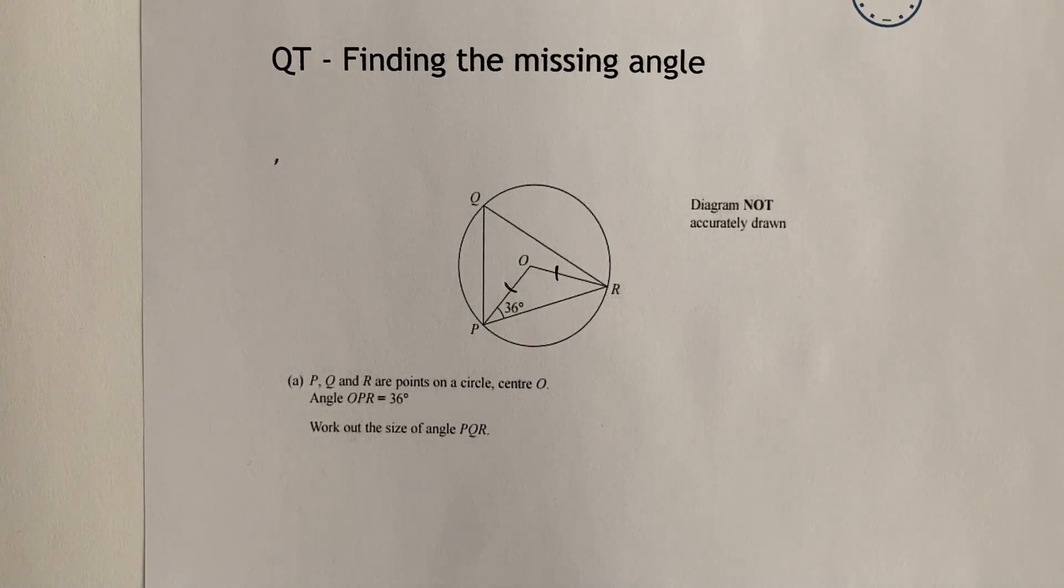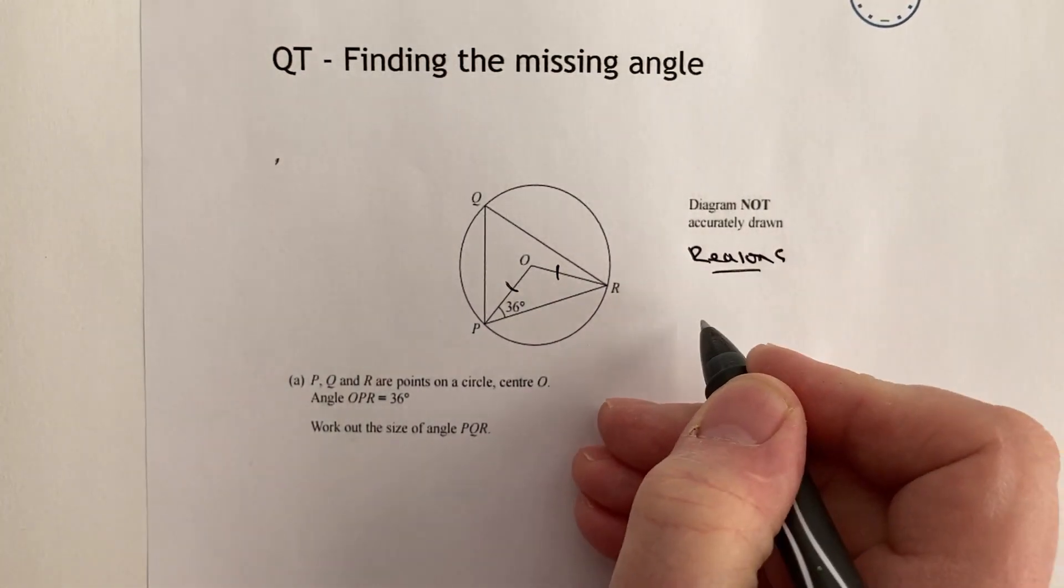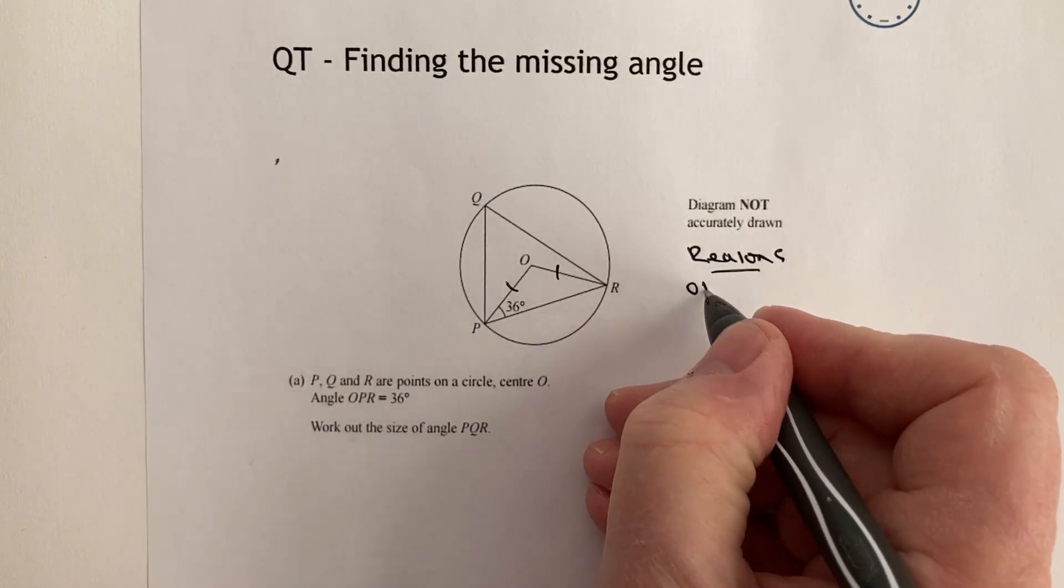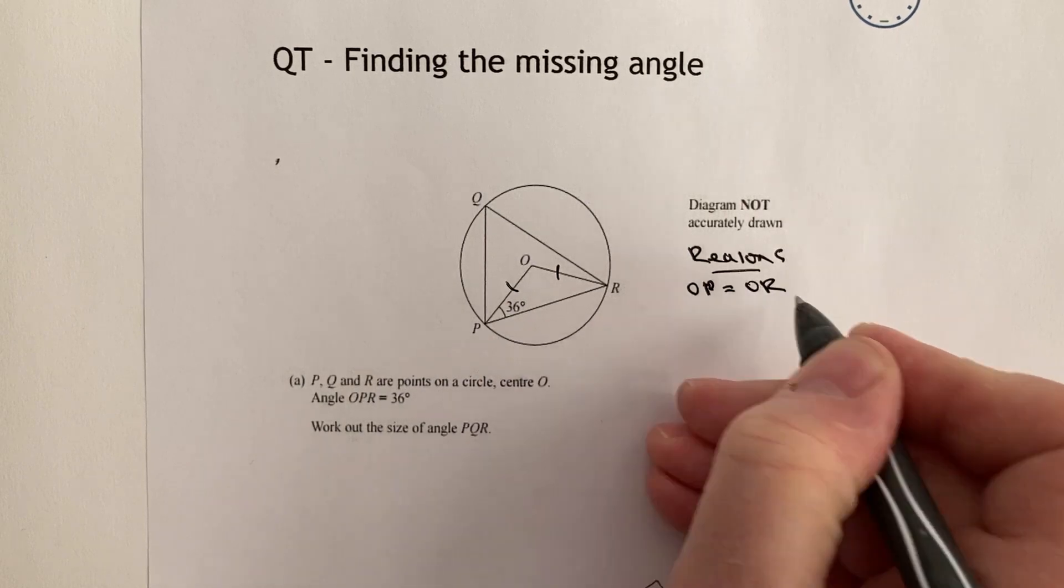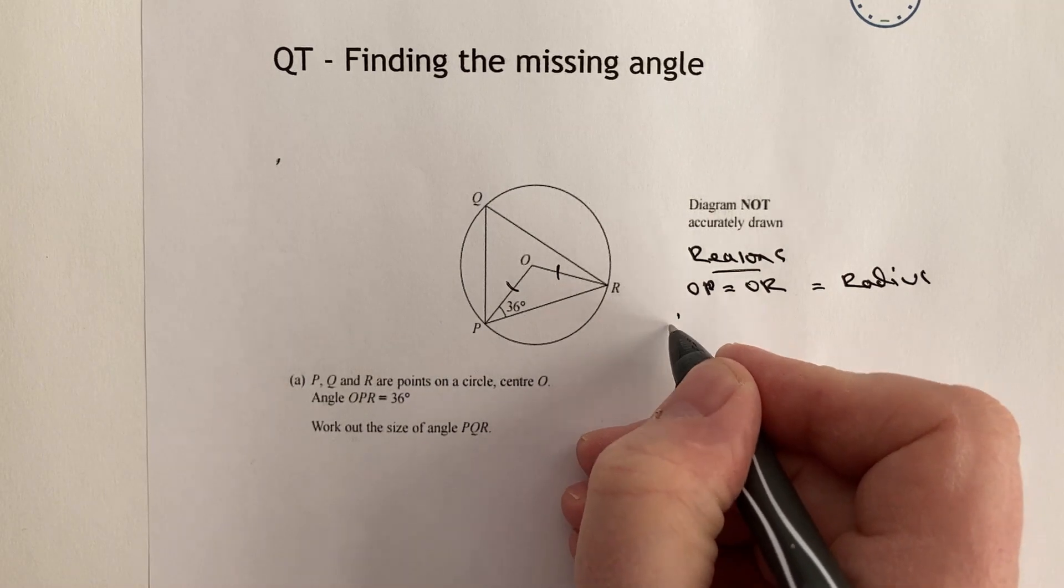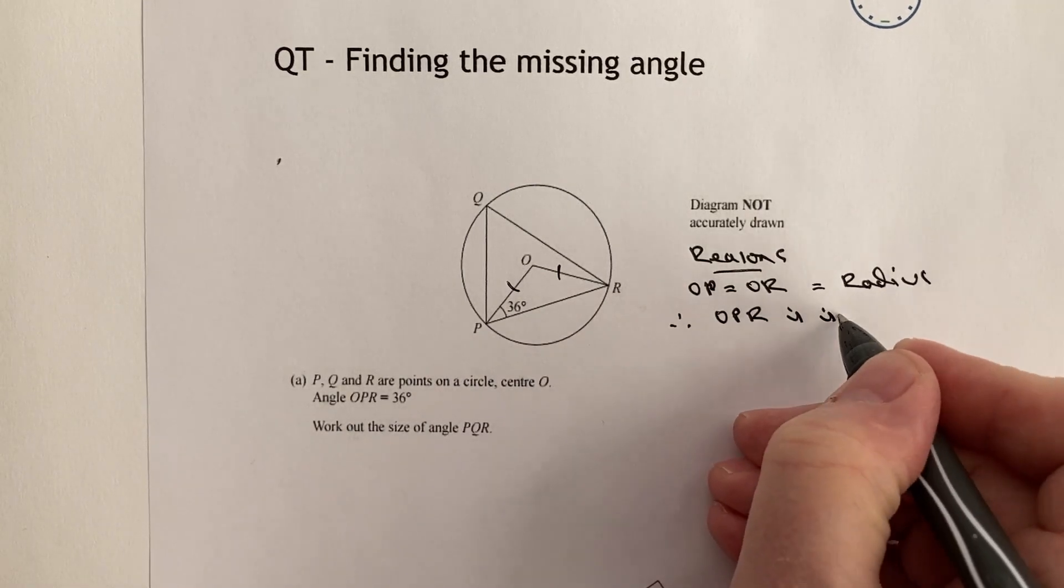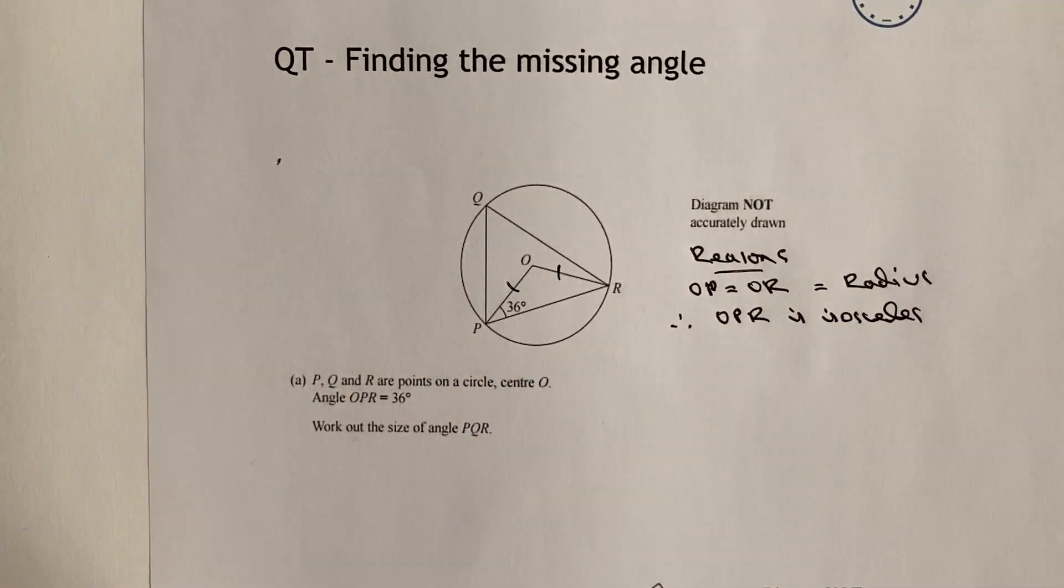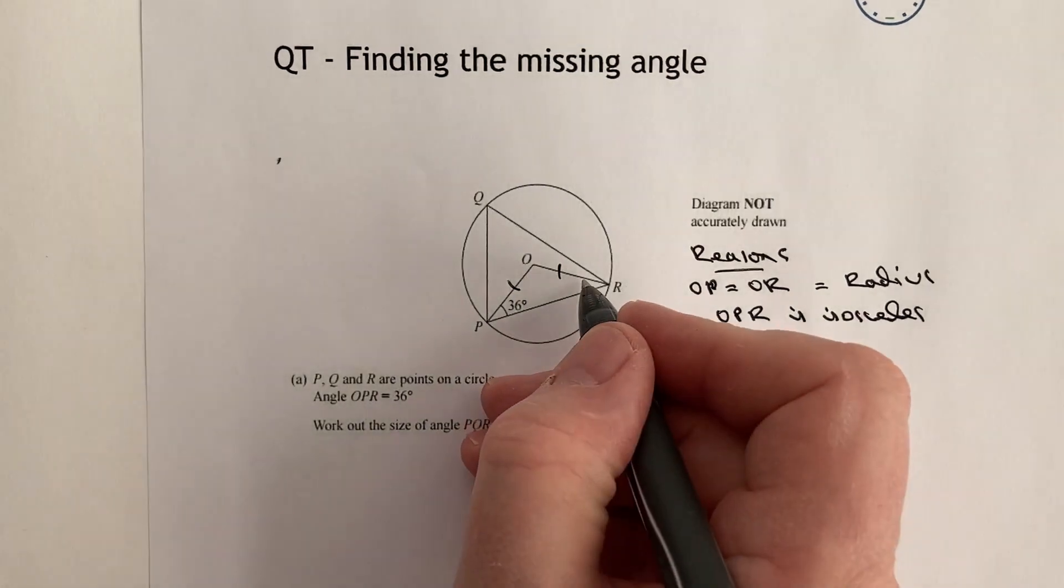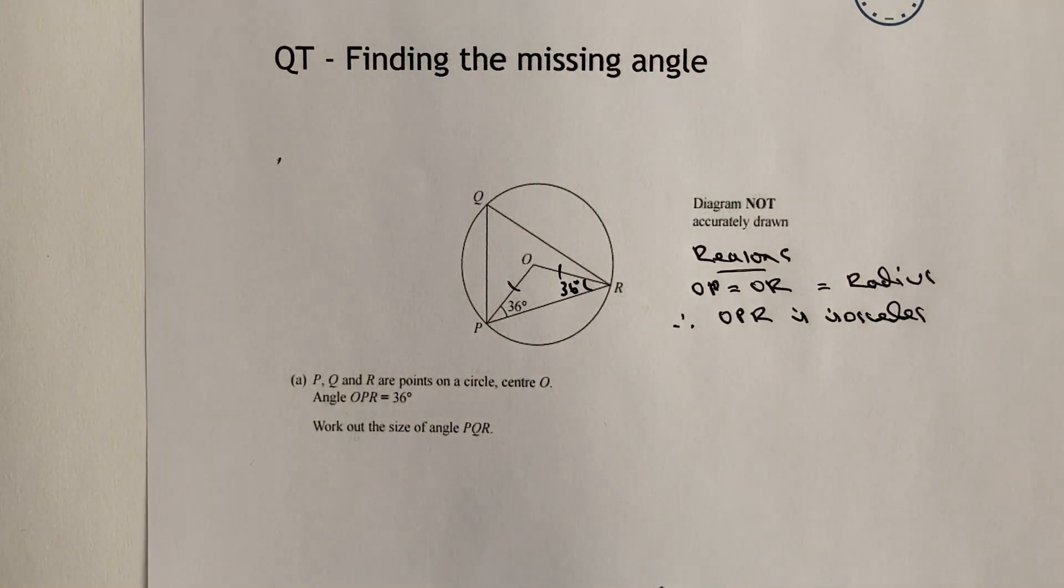Now with a lot of these questions they tend to ask you to write out the reasons for your working as well. I'm happy to do that but I'm just going to make notes here. The reasons I would say here is that OP equals OR because they're both radius, and therefore OPR is isosceles, so that also means then that the two angles at the bottom are the same, they're both going to be 36 degrees.